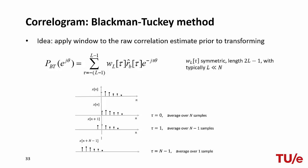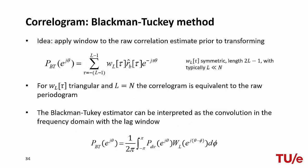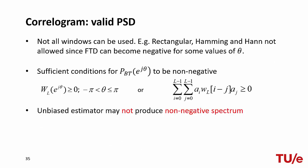An improvement to the correlogram was proposed by Blackman and Tukey, and it is based on windowing the autocorrelation function. By applying a window whose length is much shorter than the signal length, the high variance due to lags at the edges of the autocorrelation function can be reduced. When we use a triangular window and a number of lags equal to the signal length, we go back to the classic correlogram. This estimator can be interpreted as the convolution between the true spectrum and the transform of the window function, so not every window is admissible — only windows that respect the non-negativity property of the autocorrelation are acceptable.